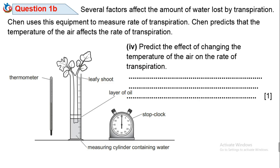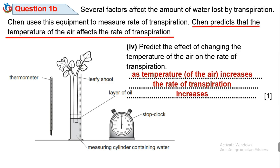Question 1b4: Predict the effect of changing the temperature of the air on the rate of transpiration. As the temperature of the air increases, the rate of transpiration — the rate at which water is lost from the plant — also increases. It is a directly proportional relationship: as temperature increases, the rate of transpiration increases.